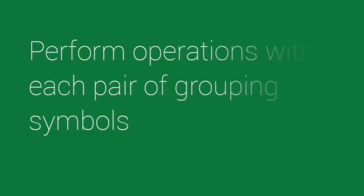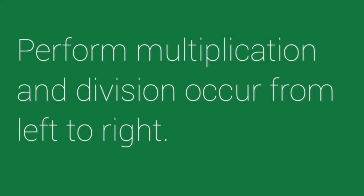Rules on order of operations under the PMDAS or GMDAS. First rule: perform all operations within each grouping symbol. In expressions with nested parentheses, begin with the innermost pair moving outward. Second rule: perform multiplication and division as they occur from left to right. Third rule: perform addition and subtraction as they appear from left to right.